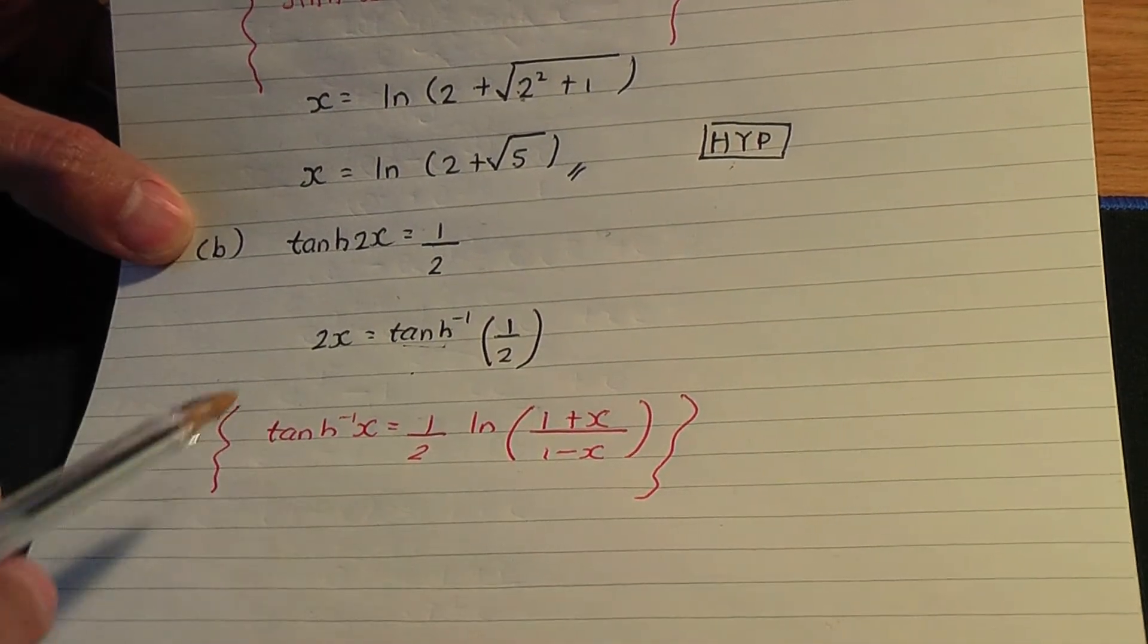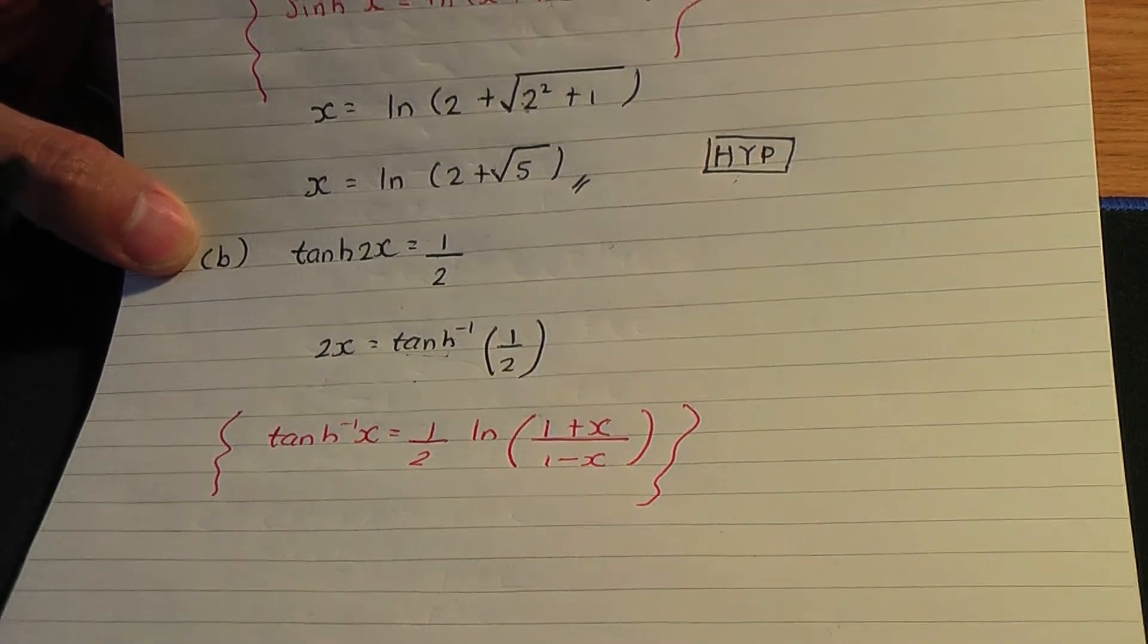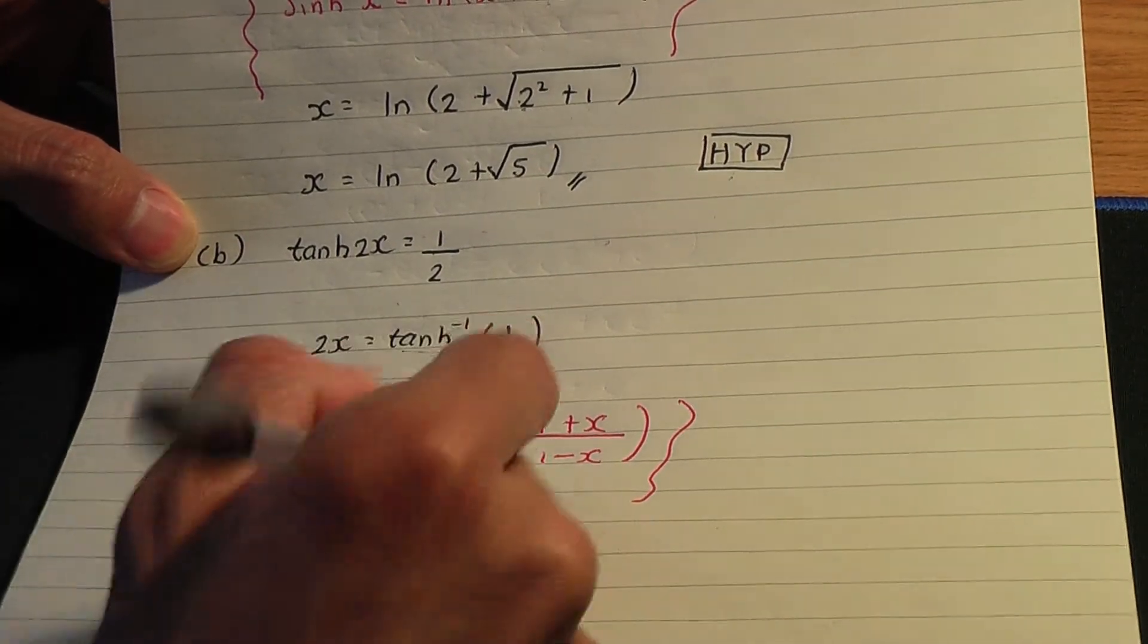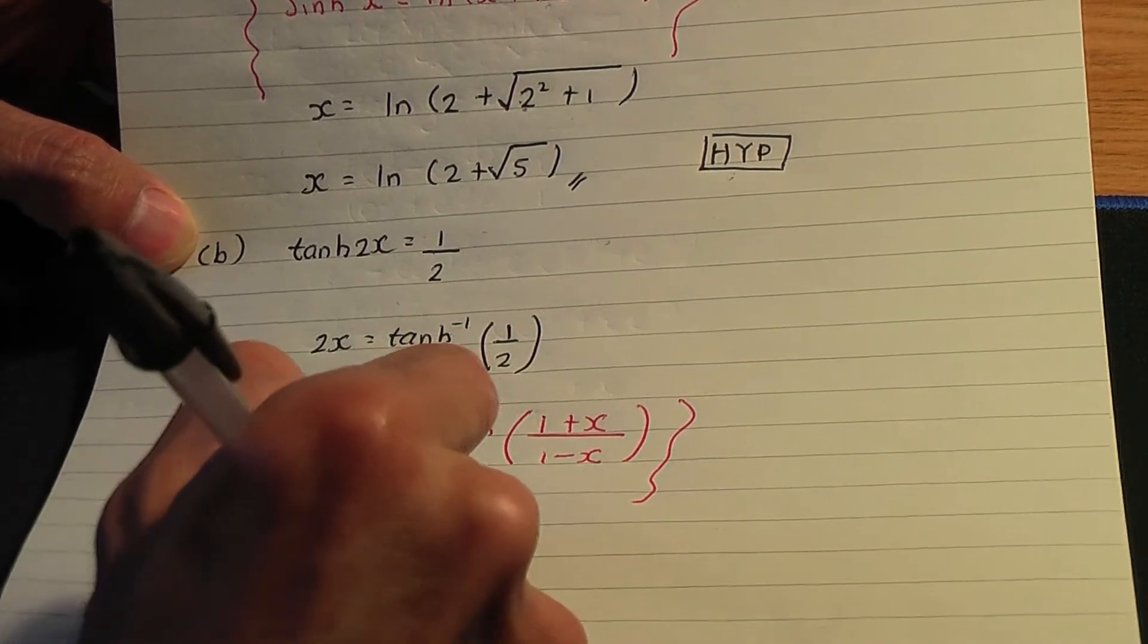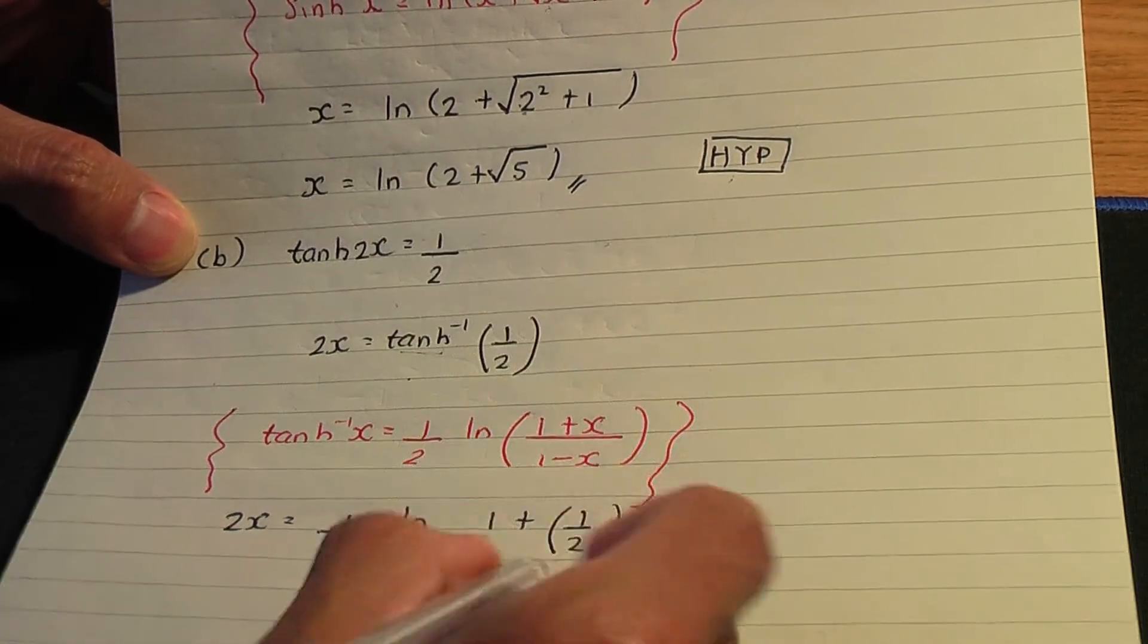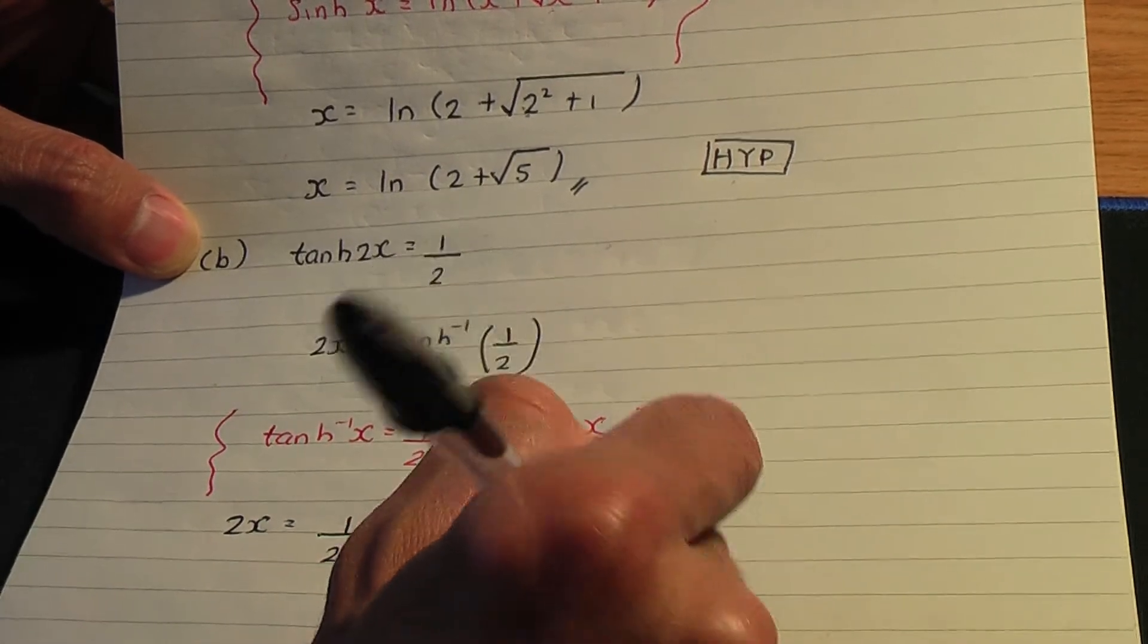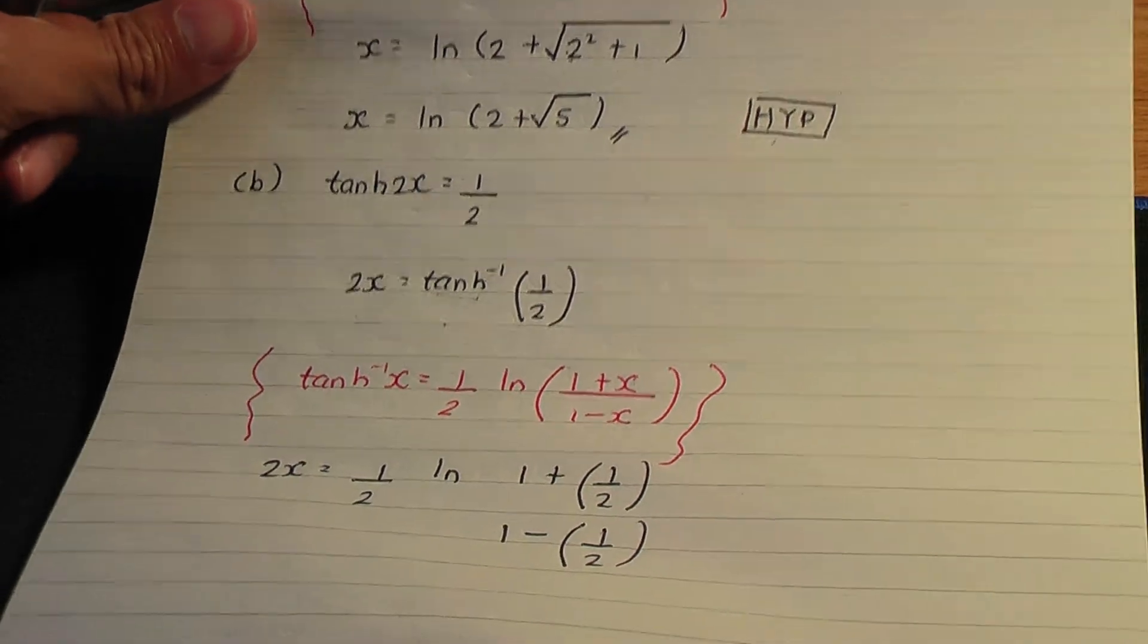Similarly, as with the previous example, if I replace the x's here by 1 over 2 or half, we're going to have 2x is equal to 1 over 2 ln, 1 plus half, divided by 1 minus half. I hope you can see that.